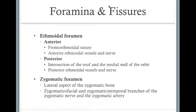The ethmoidal foramen is divided into anterior and posterior. They're both located at the junction of the roof of the orbit and the medial wall. The anterior is located at the frontoethmoidal suture, and the anterior ethmoidal vessels and nerves pass through it. For the posterior, it's at the intersection of the roof and the medial wall of the orbit, and the posterior ethmoidal vessels and nerves go through it.